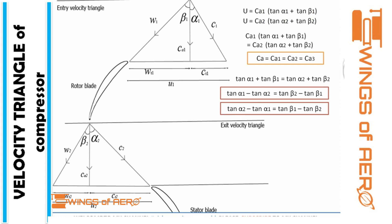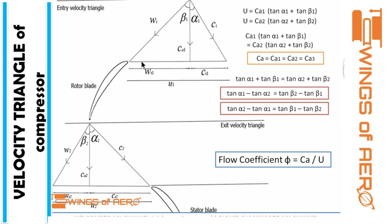The second important concept is the flow coefficient, denoted by phi, which is the ratio of axial flow velocity to blade speed: phi = CA / U. Looking at the diagram, CA1 is on one side and U is the base. The reciprocal of the flow coefficient can be written as: 1/phi = tan(alpha1) + tan(beta1) = tan(alpha2) + tan(beta2). These are important formations to remember.